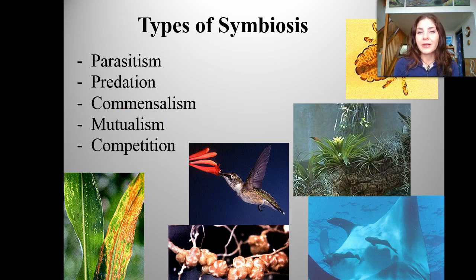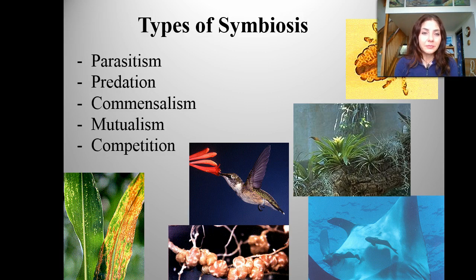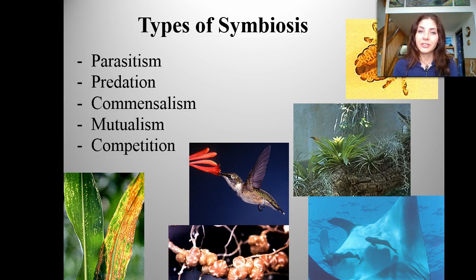There are different types of symbiosis that I'm going to discuss today, and it's not limited to the terms I'll cover — there are many subclassifications. So I'm just going to hit on the main points. What we're going to discuss today are parasitism, predation, commensalism, mutualism, and competition.